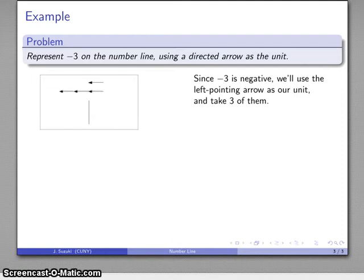I want three of these left pointing arrows. So if this is negative 1, this is negative 1, negative 2, negative 3, and I put them together in a nice order.